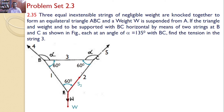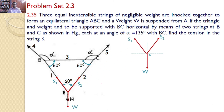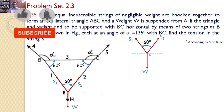The forces in strings 1 and 2 are along those strings and away from point A. The force in string 2 is S2 and the force in string 1 is S1. I can transfer all three forces onto a separate XY plane — weight W, next S2, then S1. The angle between S1 and S2 is 60 degrees. All three forces are concurrent and divergent.